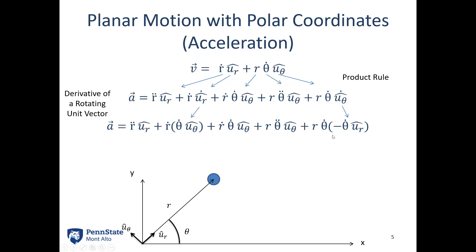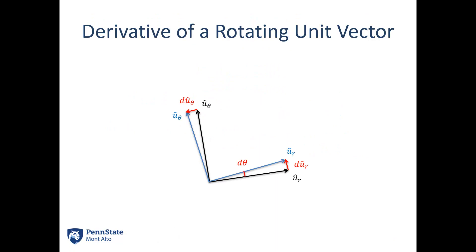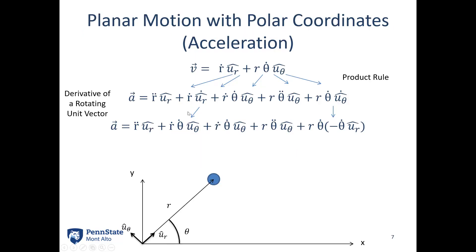Why does the negative sign show up? Looking at the diagram, when we consider the change in ur going from the black to the blue vector, the magnitude is theta-dot and it is in the u-theta direction — the u-theta direction is the black one, and it moves up in that same direction. Now for u-theta: as we rotate counterclockwise with positive theta-dot, the tip of this vector still has magnitude theta-dot, but the direction is to the left, whereas the ur direction is to the right. This is actually the negative ur direction, which is why we have negative theta-dot times ur for that derivative.